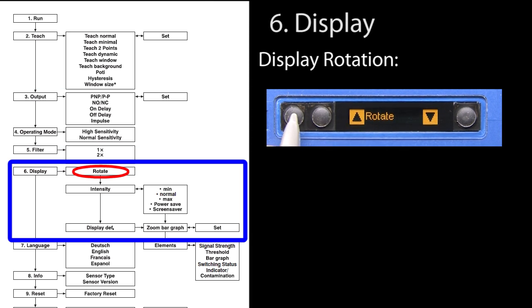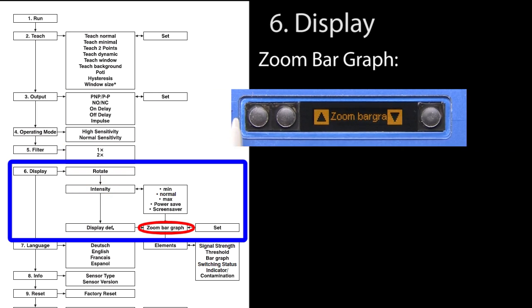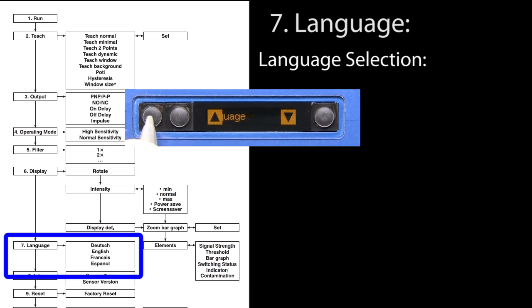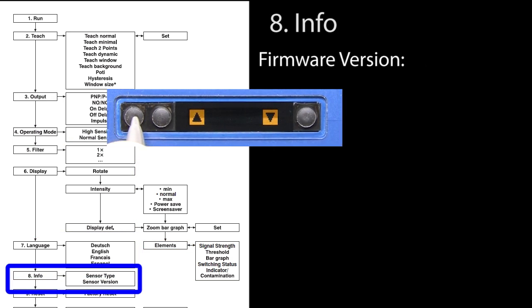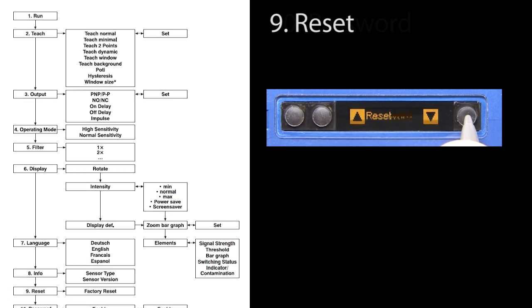You can rotate the display which is handy if you have to mount the sensor upside down. You can adjust the display brightness. You can zoom the bar graph. You can even specify which display elements you want to see on the display. You can choose the language of the display. And you can see the firmware version of the sensor. And finally, you can do a factory reset.